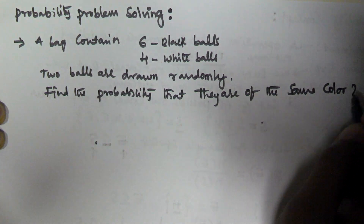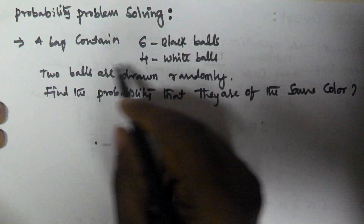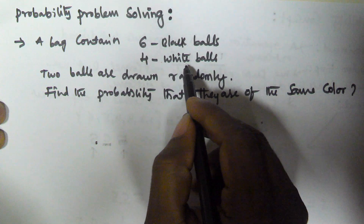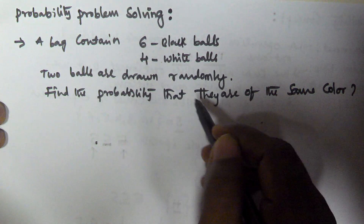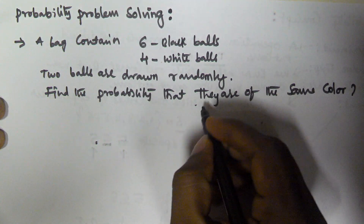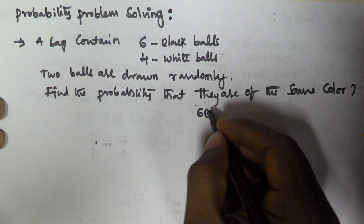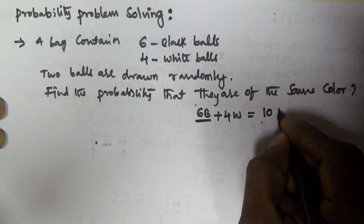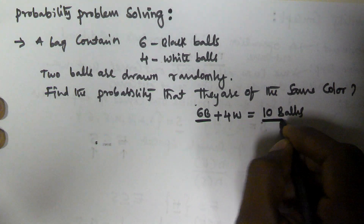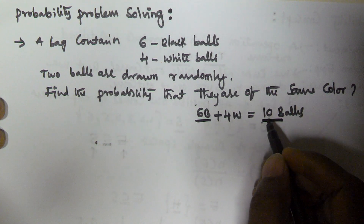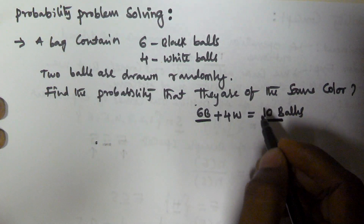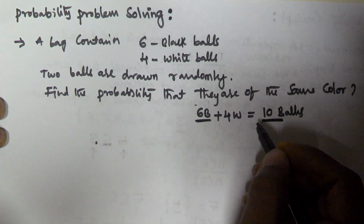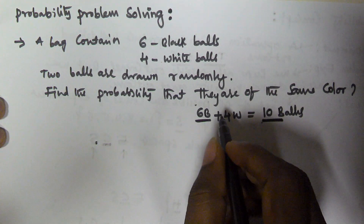So that means if we are drawing 2 balls from the bag, the 2 balls may both be black balls or the 2 balls may both be white balls. We have to find the probability that both the balls are of the same color. There are 6 black balls plus 4 white balls, giving a total of 10 balls.